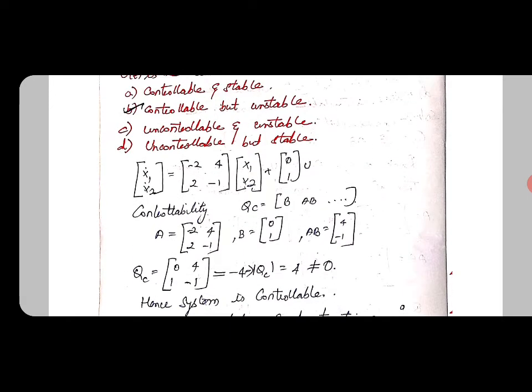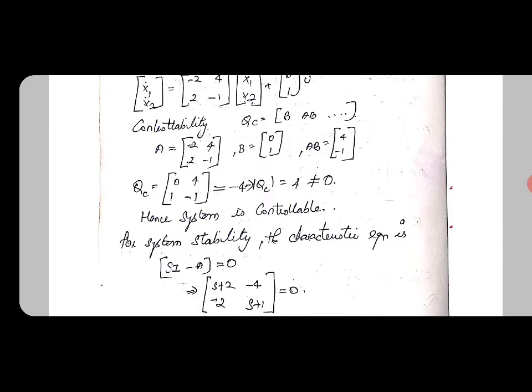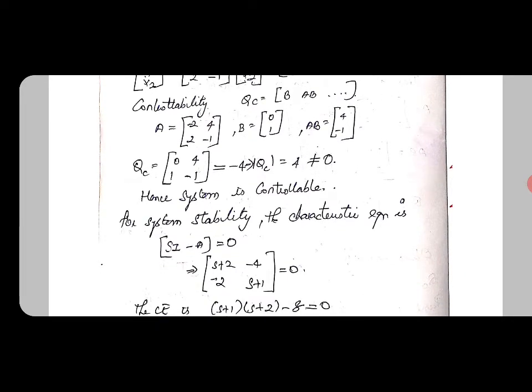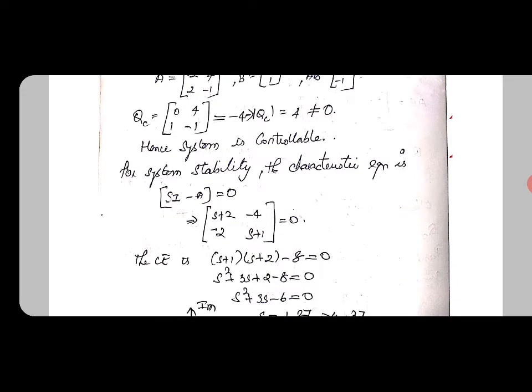Next, they are asking the stability of the given system. We can find the stability by the characteristic equation. The characteristic equation is sI - A = 0, where s is the identity matrix [s 0; 0 s] minus A = [-2 4; 2 -1] equal to 0.